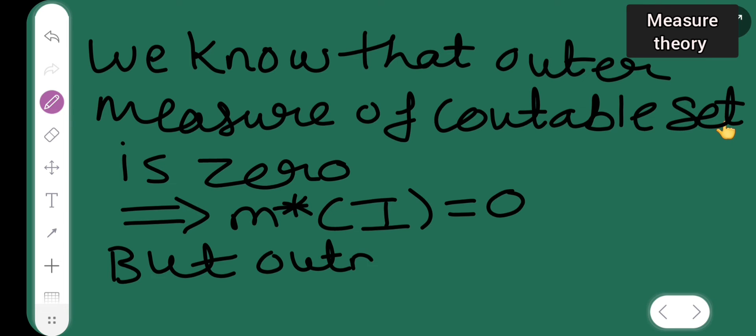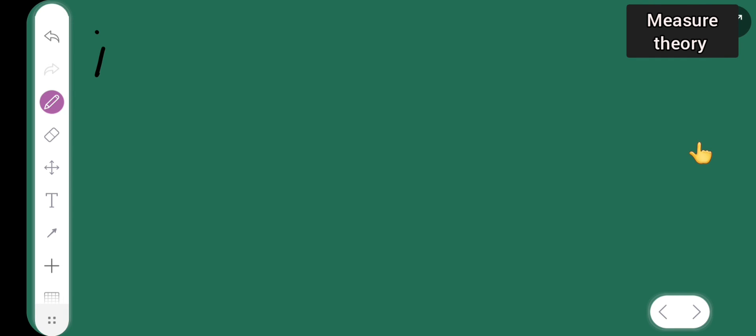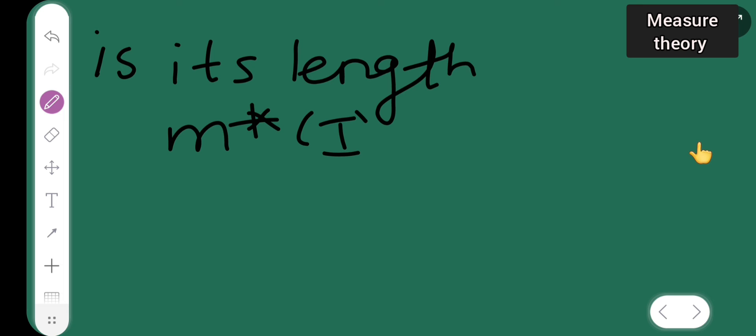But the outer measure of any interval is its length. So the outer measure of I is equal to 1. This is a contradiction to the fact that we assumed something. So the assumption is wrong.